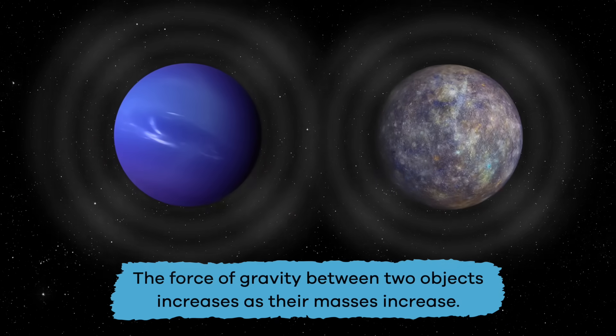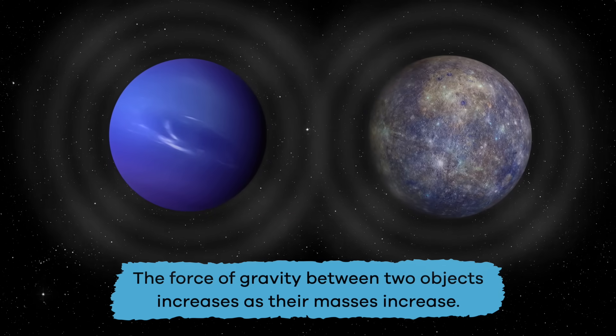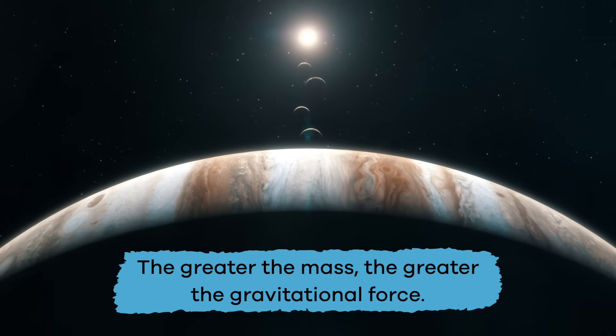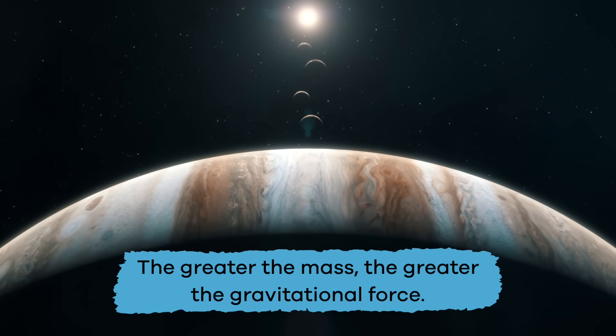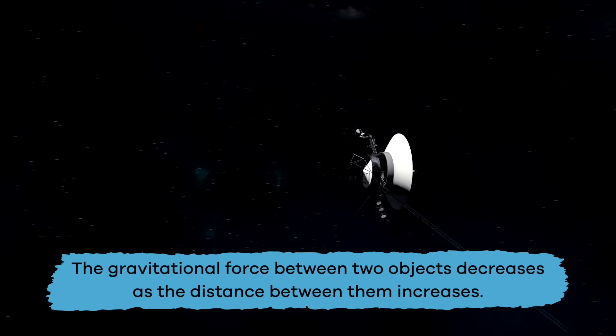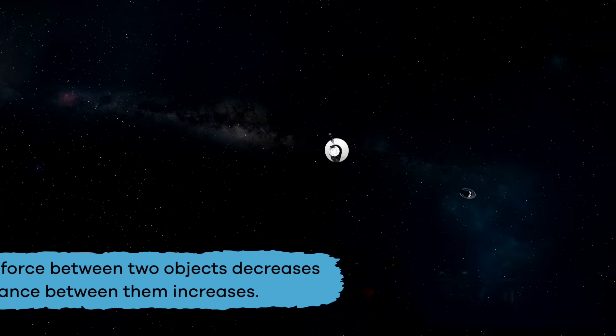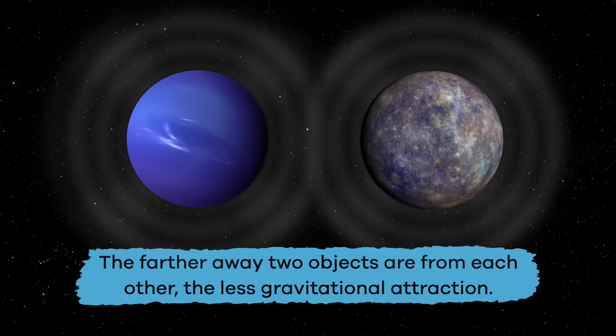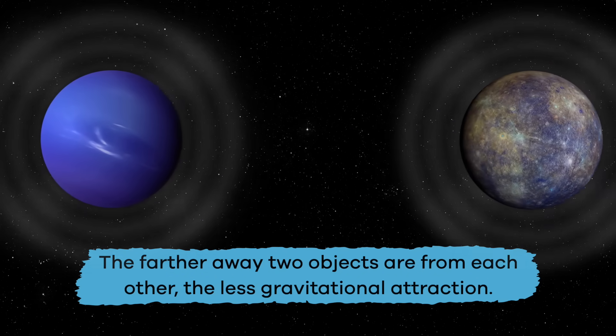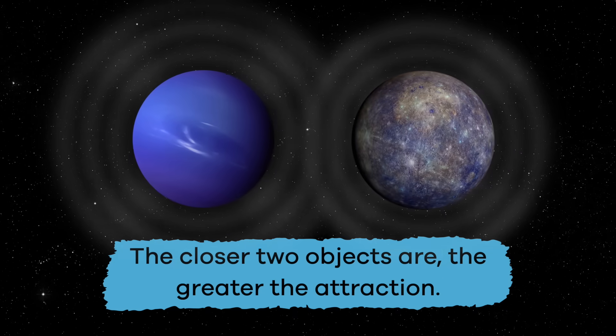The force of gravity between two objects increases as their masses increase. In other words, the greater the mass, the greater the gravitational force. Also, the gravitational force between two objects decreases as the distance between them increases, which means that the farther away two objects are from each other, the less gravitational attraction. The closer two objects are, the greater the attraction.